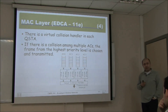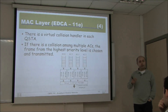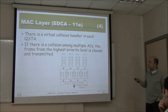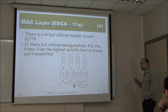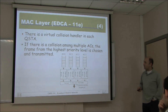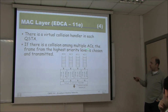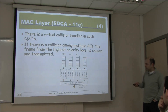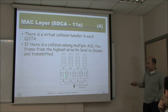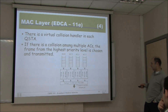The AIFS for an access category AC equals the standard SIFS plus the AIFS[AC] value. Each queue starts with a different minimum contention window and maximum back-off window per access category. The station acts as four virtual stations inside one physical station, with a virtual collision handler. If multiple access categories would collide simultaneously, the frame from the highest-priority access category is chosen and transmitted instead.